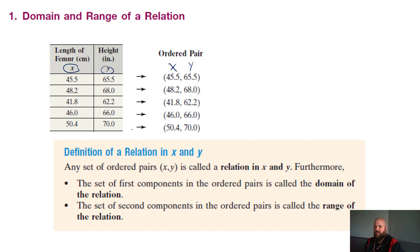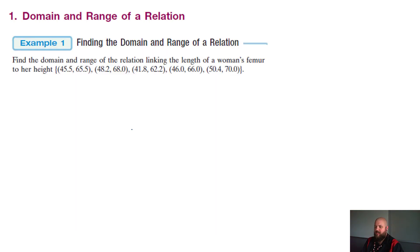So the definition of a relation in x and y. Any set of ordered pairs, x and y, is called a relation in x and y. Furthermore, the set of first components in the ordered pairs is called the domain of the relation. And the set of the second components of the ordered pair is called the range of the relation. So there is where we get our domain and range. Domain is dealing with your x, and y is dealing with your range.